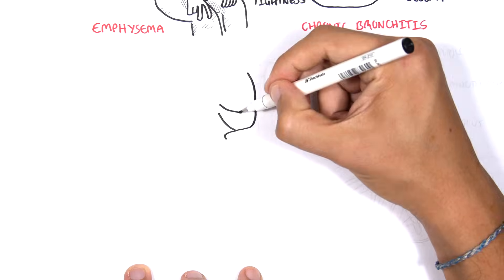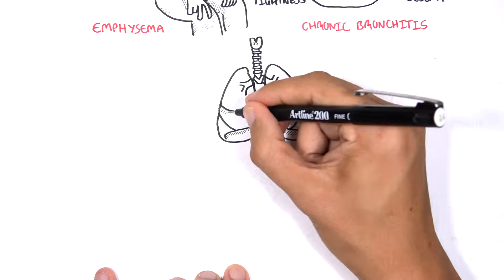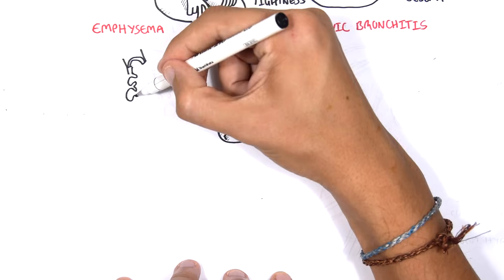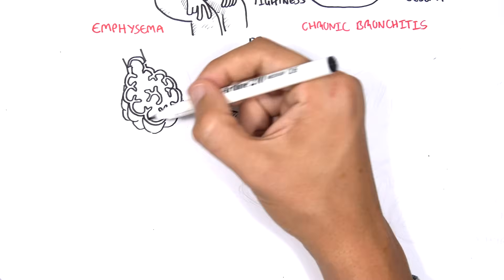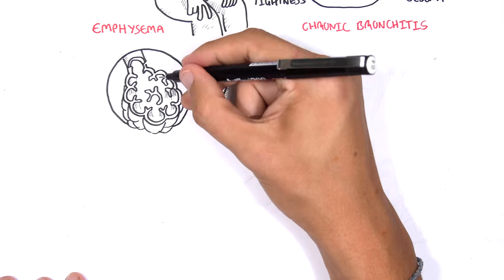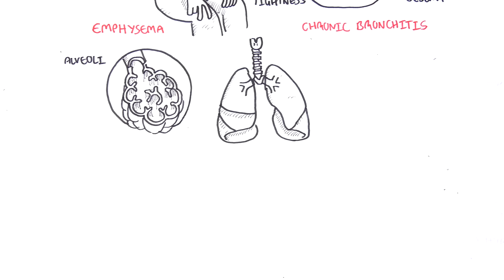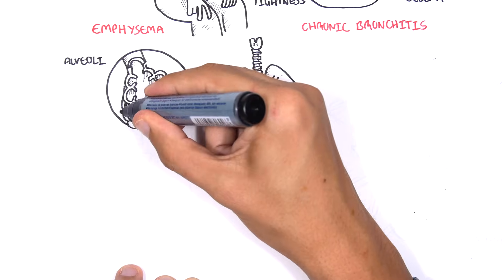Let us now look at the pathology. Here I am drawing a lung. Let us first begin by looking at changes that occur in emphysema. Pure emphysema mainly affects the functional units of the lungs, which are the alveoli.